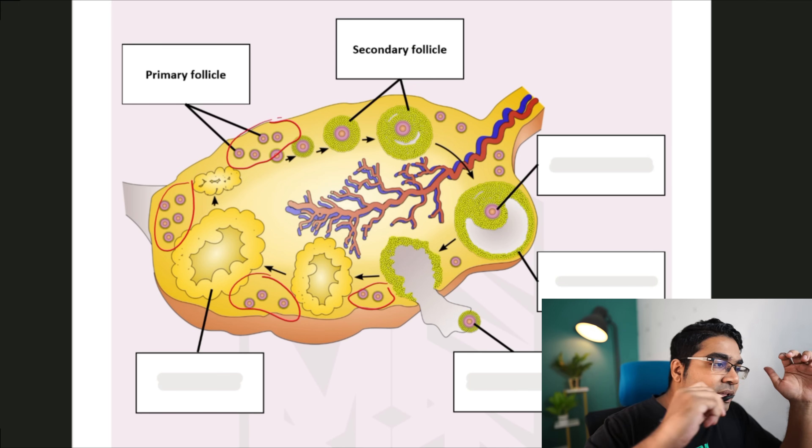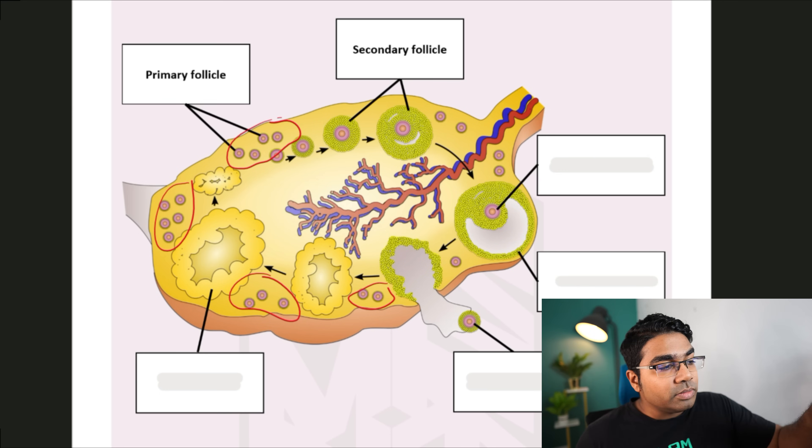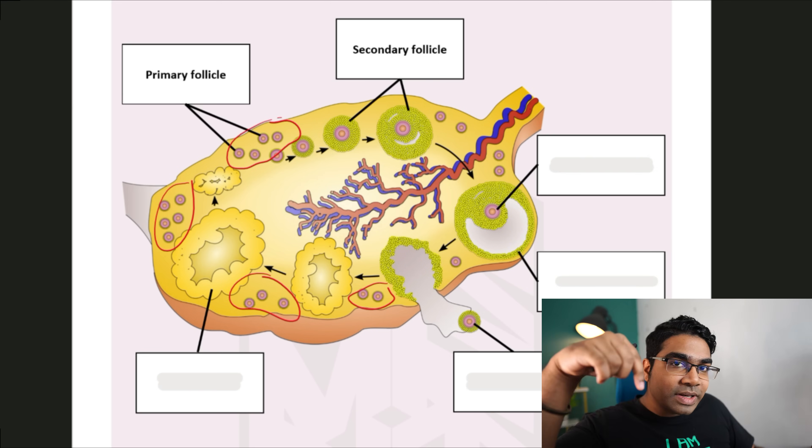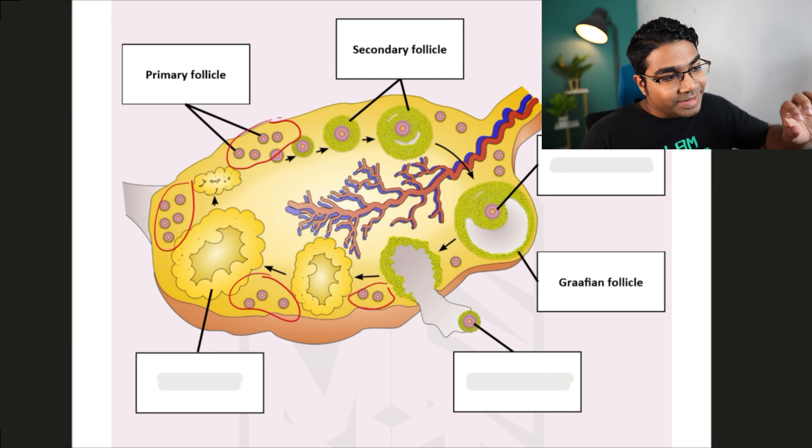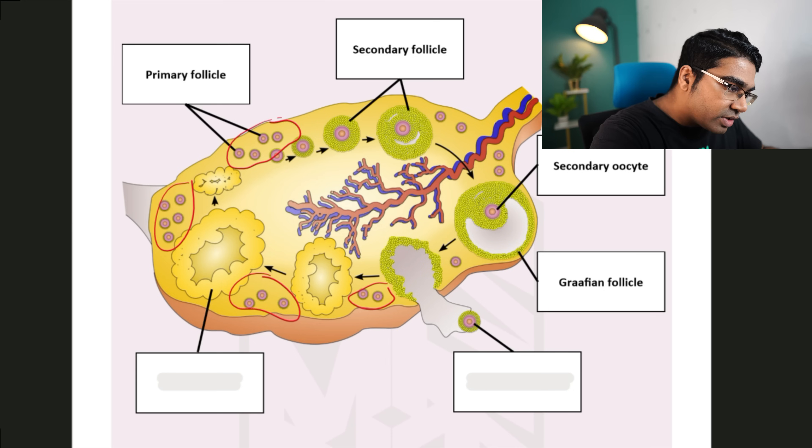And then we have secondary follicles. As you can see, we have the secondary oocyte and we have a few layers of follicle cells surrounding it. This process and the continuing process from here until the end actually occurs during the menstrual cycle. I will prepare a separate lesson for that. I'll leave a link in the description below. And so the secondary follicles will then develop to become the graafian follicle. Inside the graafian follicle, we have the secondary oocyte.